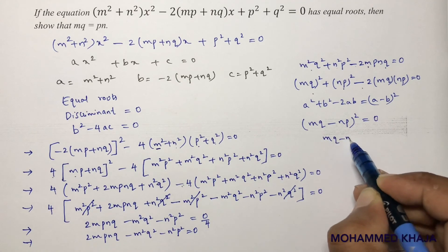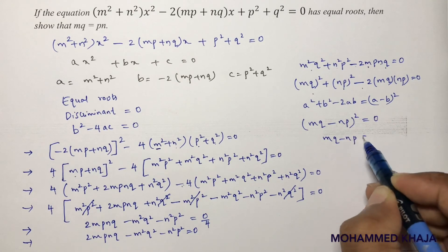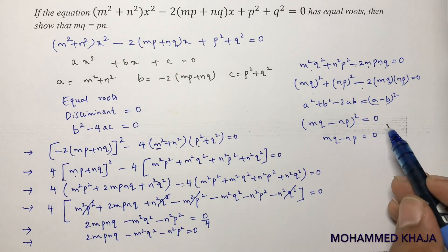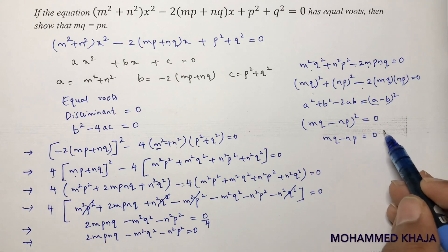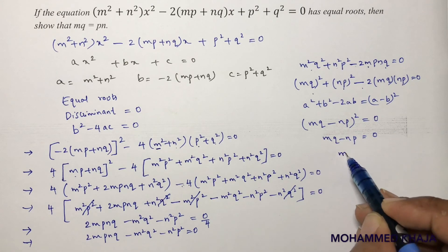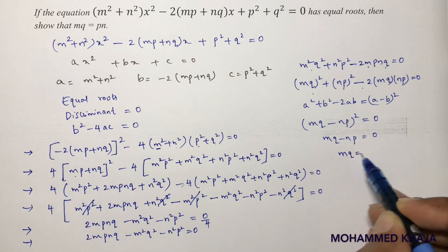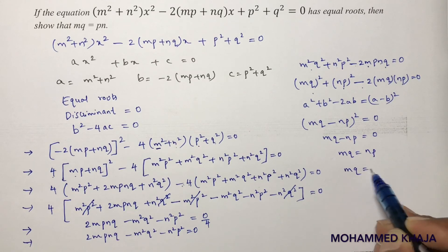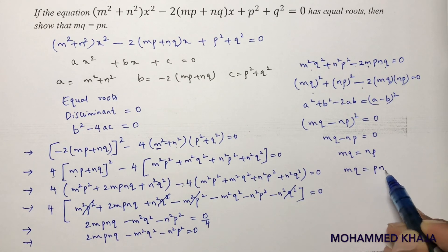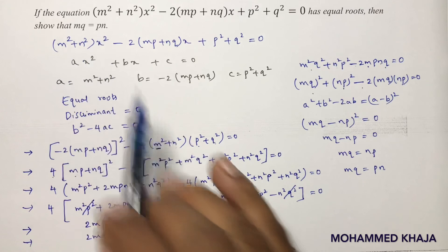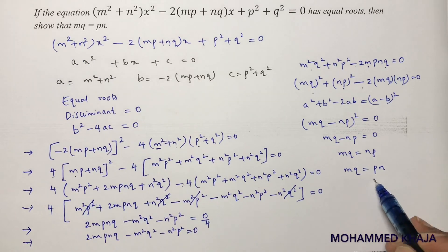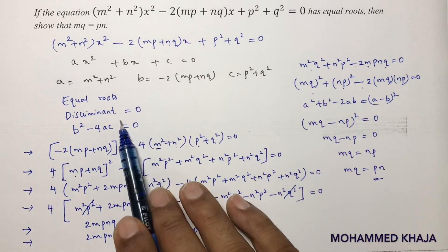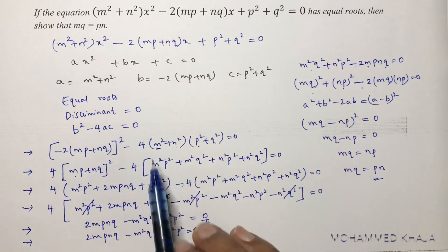So mq − np = 0, taking square root on both sides. Therefore mq = np. Hence, we got the answer: mq = np. The key approach was: since roots are equal, just set the discriminant equal to 0.